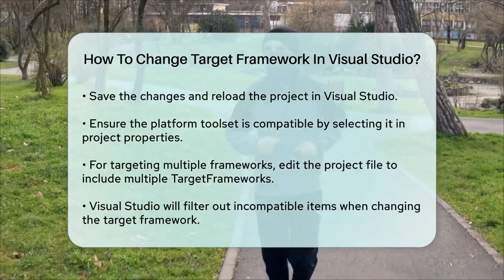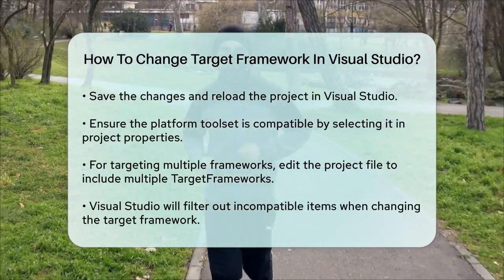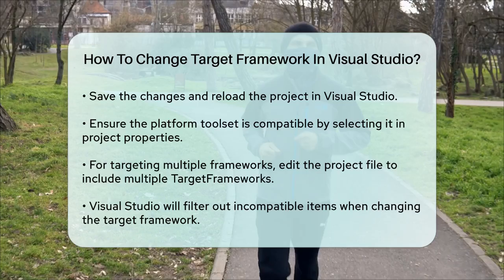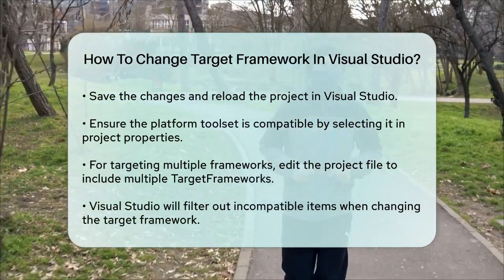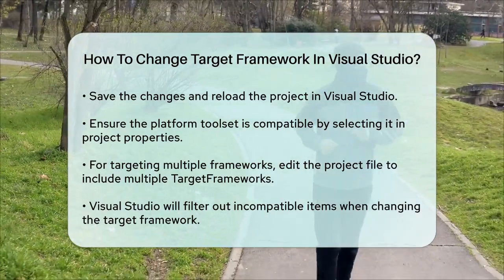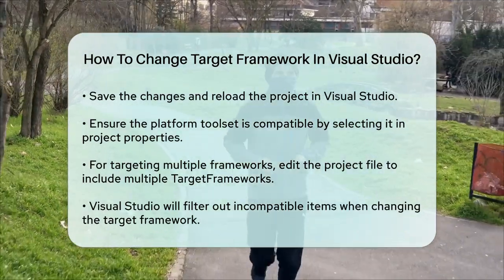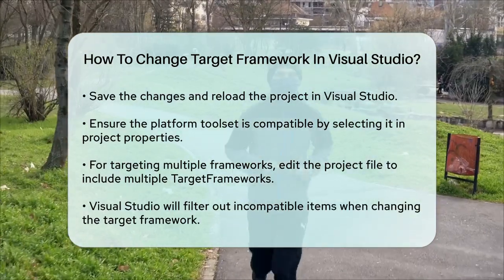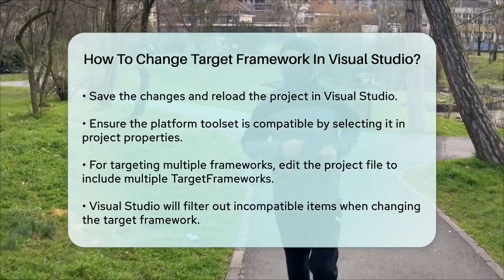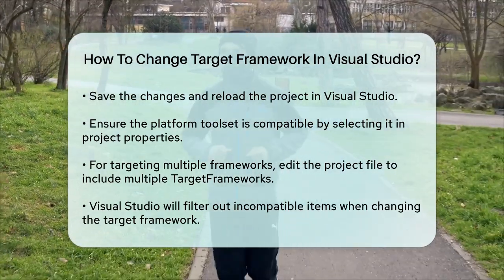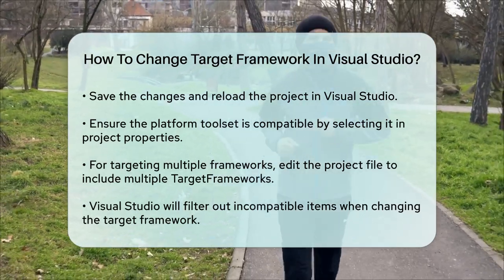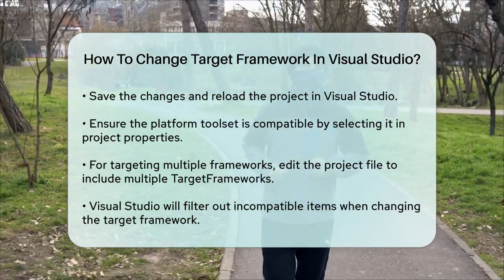Remember, when changing the target framework, Visual Studio will adjust the development environment accordingly, filtering out items that aren't compatible with the new target framework. This ensures that you only see features and references that are available in the version you're targeting. By following these steps, you can easily change the target framework for your projects in Visual Studio, making sure your applications are compatible with the right version of the .NET Framework.